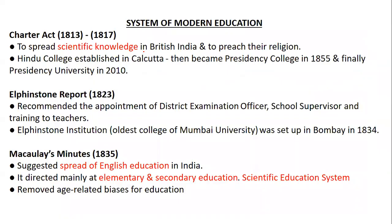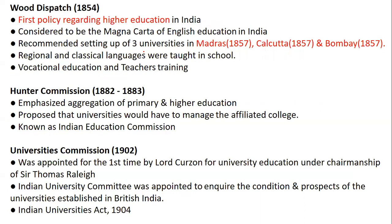The modern education system includes all the historical commissions. The Charter Act (1813) focused on the spread of knowledge — Hindu College was established in Kolkata, which later became Presidency College and finally Presidency University in 2010. The Elphinston Report (1823) led to Elphinston Institution in Bombay (1834). Macaulay's Minutes — there was a question on this in 2022 — focused on spreading elementary and secondary education and removing age-related bias; age should not be a factor in education.